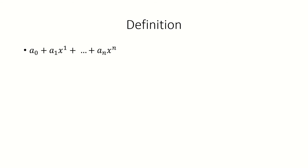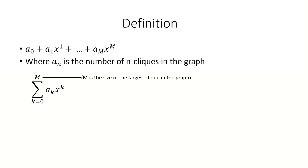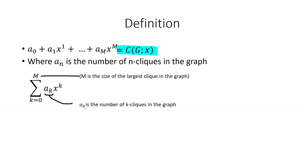The clique polynomial of an undirected simple graph is defined as a polynomial in x, whose coefficient on an n-degree term is the number of n-cliques in that graph. In other words, it is the sum from k equals 0 to m, where m is the size of the largest clique in the graph, of a sub k times x to the k power, where a sub k is the number of k-cliques in that graph. The shorthand notation for the clique polynomial of some graph g is this, which means the clique polynomial of g evaluated at x.